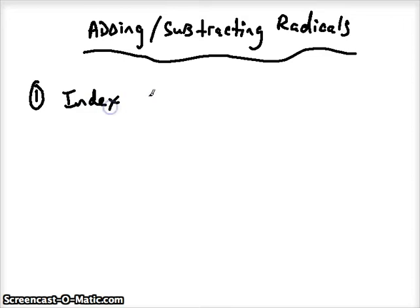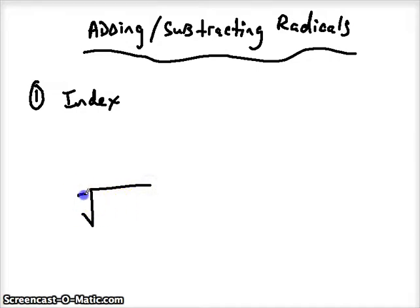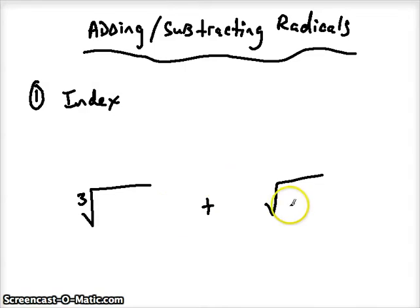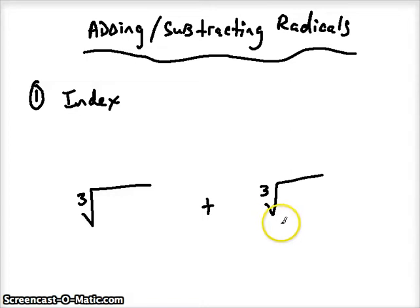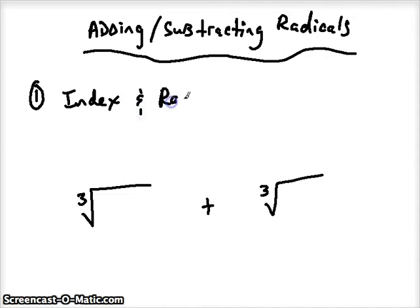The first is that the index has to be the same. For example, if I had a cube root and I was trying to add that to something that was a square root, I could not add or subtract these because the index — this number right here — is not the same. So in order to add or subtract, my index has to be the same.